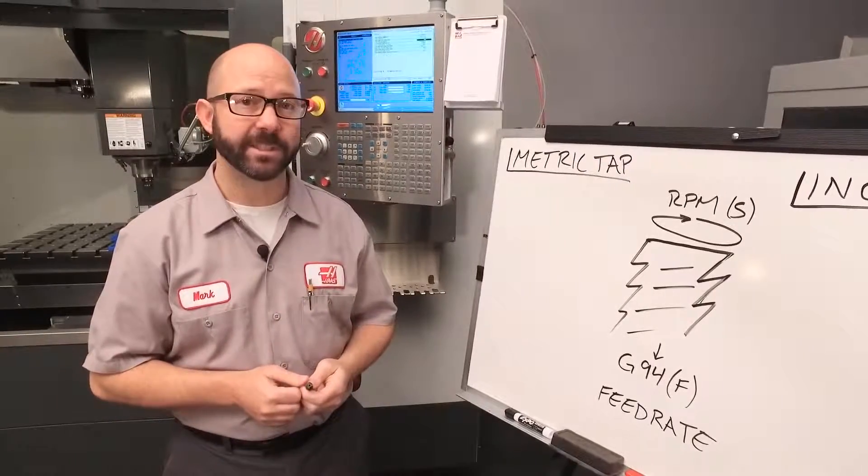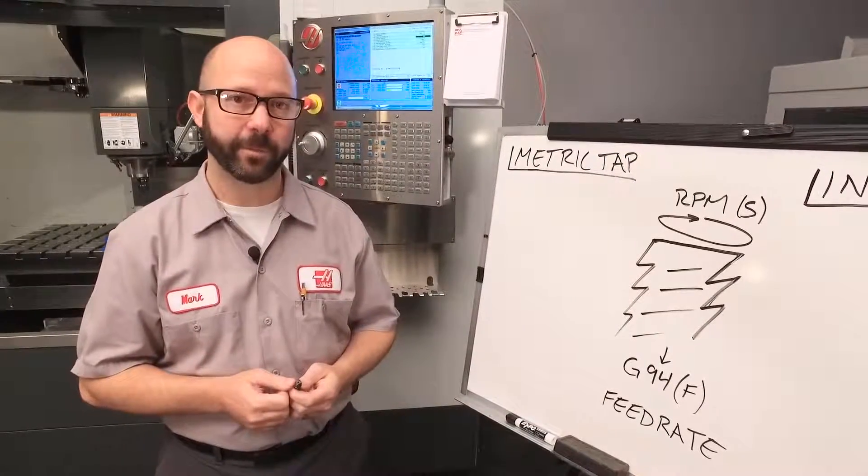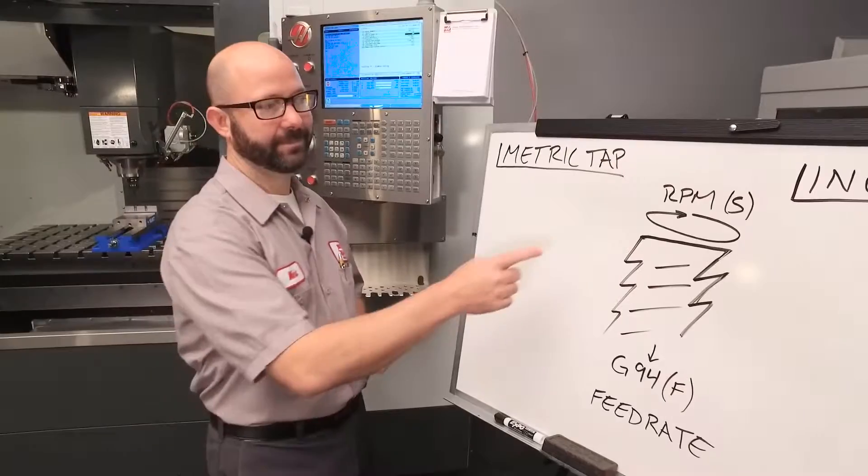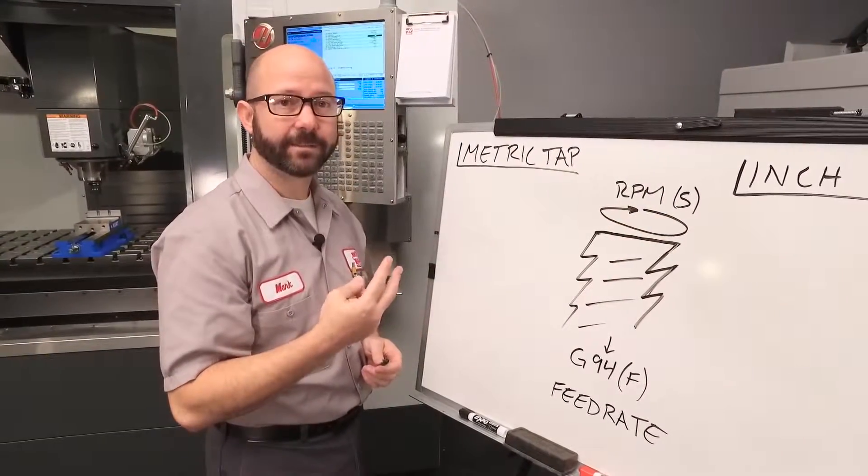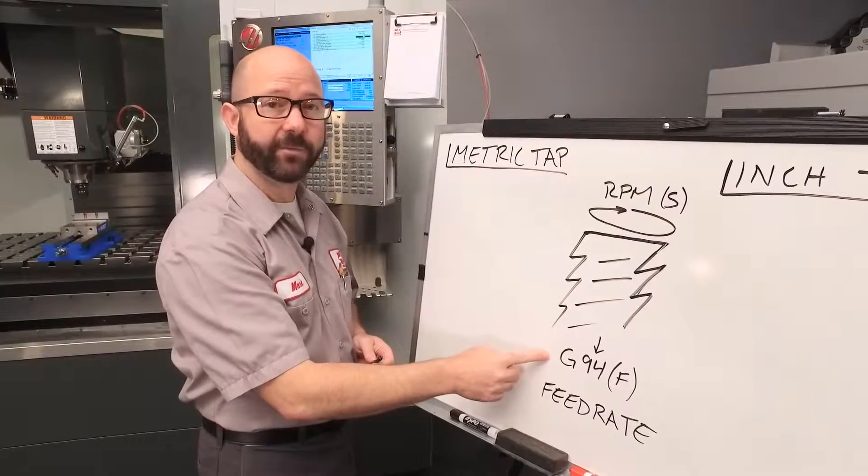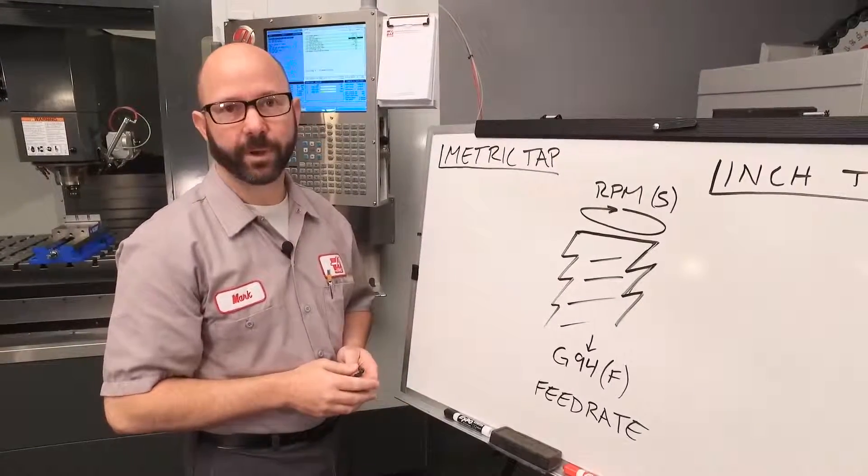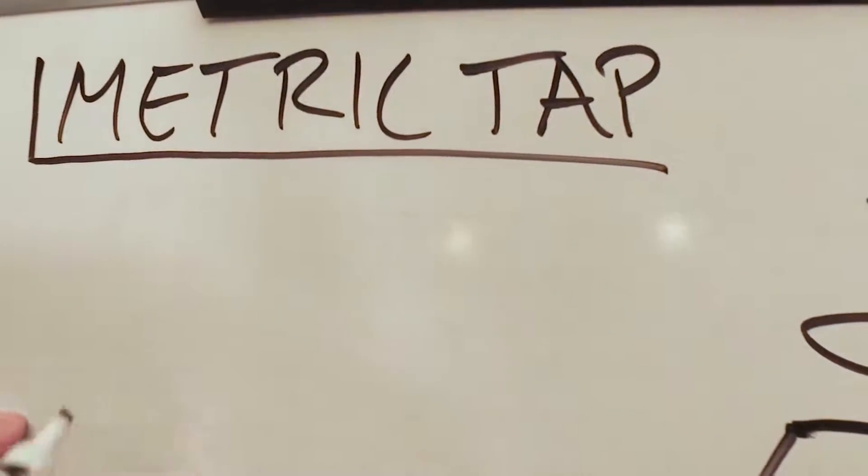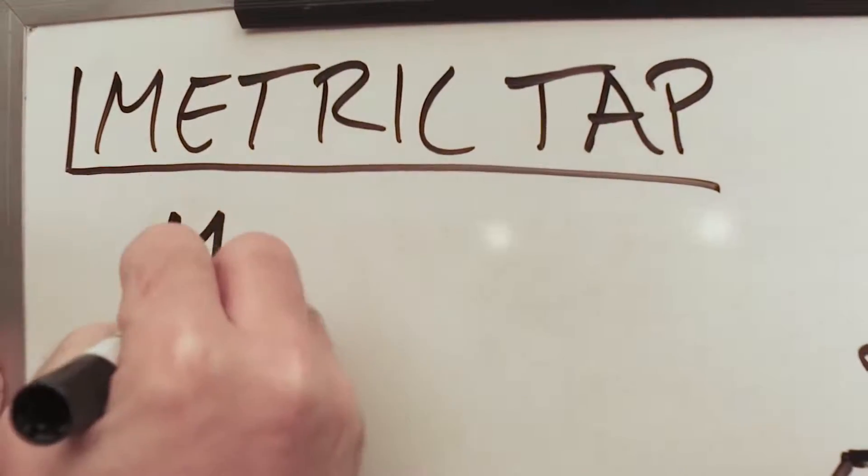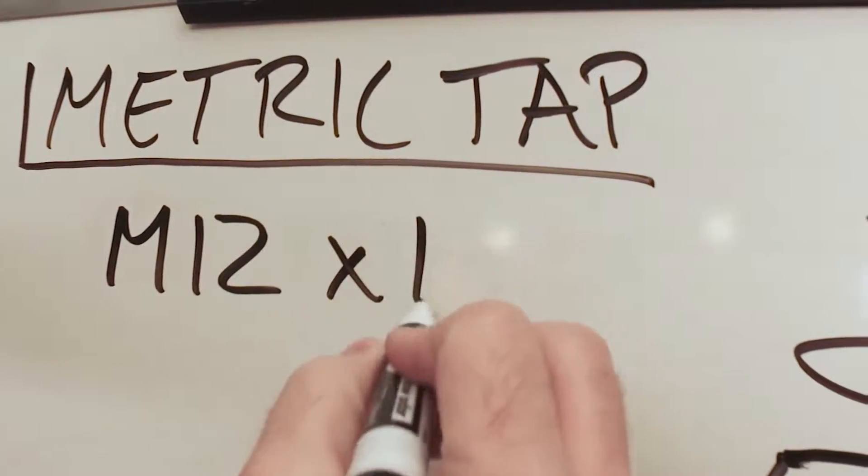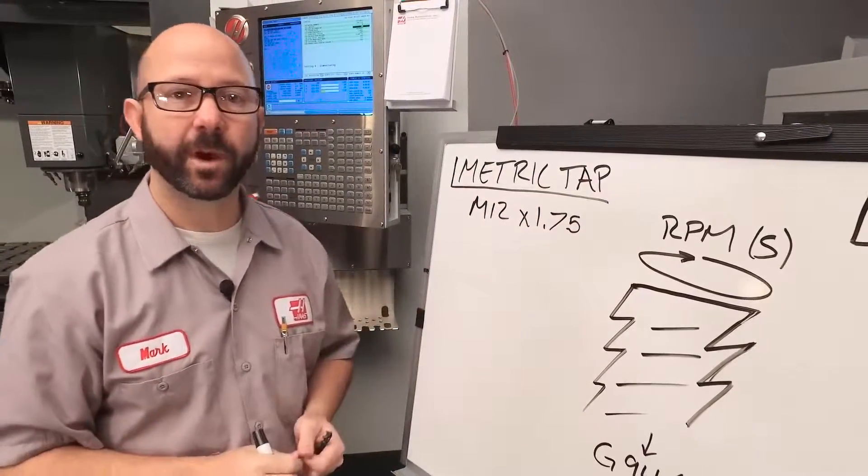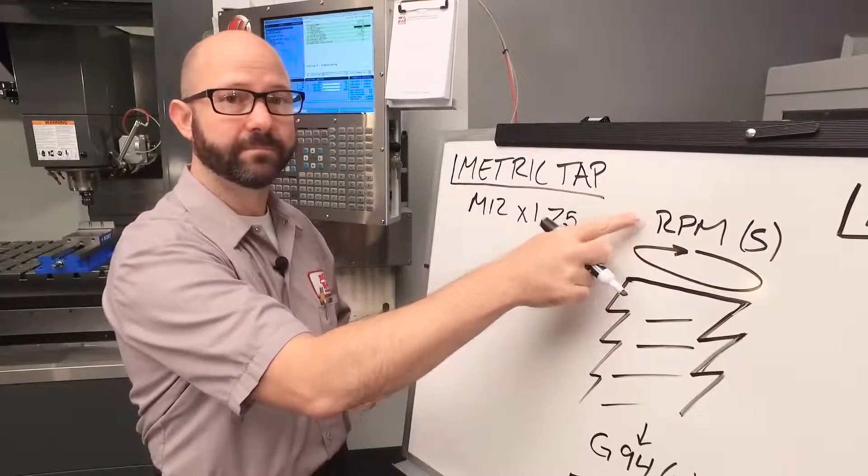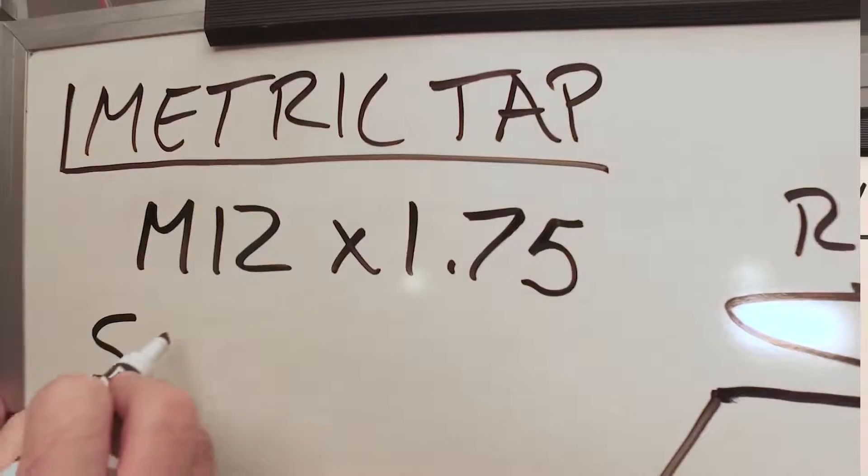Our G84 tapping cycle needs two critical pieces of information. First, it needs to know our RPM, our S value. And second, we need to know our G94 millimeter per minute feed rate. Now for this first example, we're going to use an M12 by 1.75 tap. The first piece of our puzzle is our RPM. We're going to use S500.